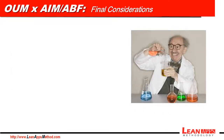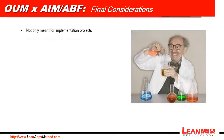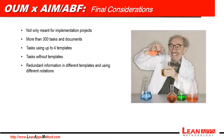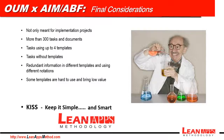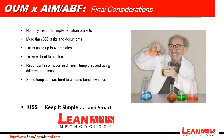As you can see, OUM is not only meant for implementation projects — it's meant for different types of project life cycles. It has over 300 tasks and documents, tasks using up to four templates, some with no templates at all. We have redundant information and different templates using different notations, which means you need to pick exactly what makes sense for your specific project. That's why some templates are hard to use and bring low value — they are not well formatted. If you want to keep it simple and yet smart, I suggest you learn about the Lean Apps method. For more details on the process, phases, and document mapping between OUM and AIM, and OUM and ABF, check out the long version of this implementation video at the bottom of this page. Thank you for watching.